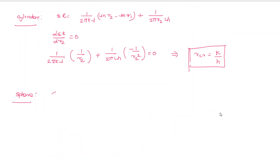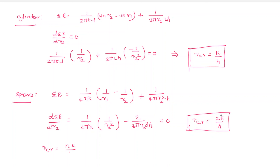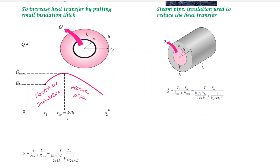For the sphere, the total resistance equals 1 divided by 4πk times (1/r1 minus 1/r2), plus 1 divided by 4πr2²·h. If we differentiate with respect to r2 and set to zero, we get the critical radius r_critical equals 2k divided by h. The generalized equation is r_critical equals n·k/h, where n equals 0 for a slab, n equals 1 for a cylinder, and n equals 2 for a sphere. This is the critical radius of insulation.